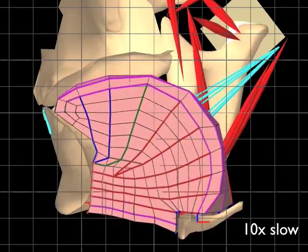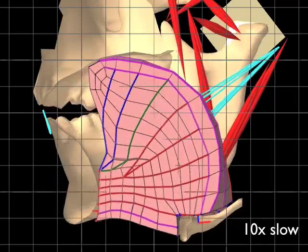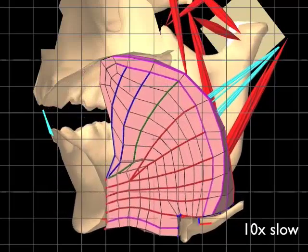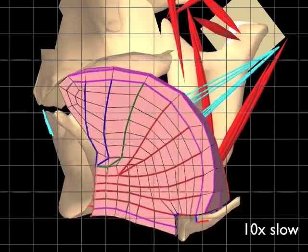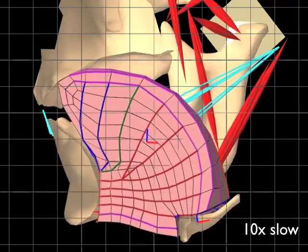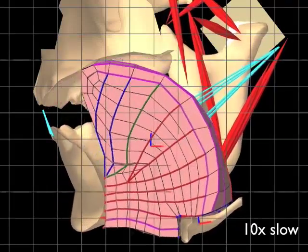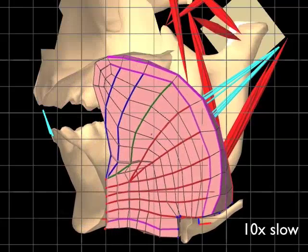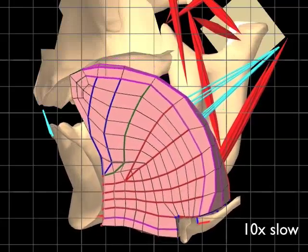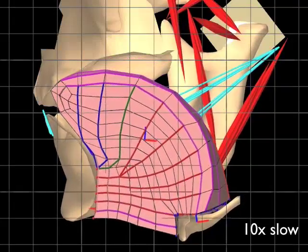The tongue model uses hexahedral FEM elements and a non-linear, nearly incompressible Mooney-Rivlin material.